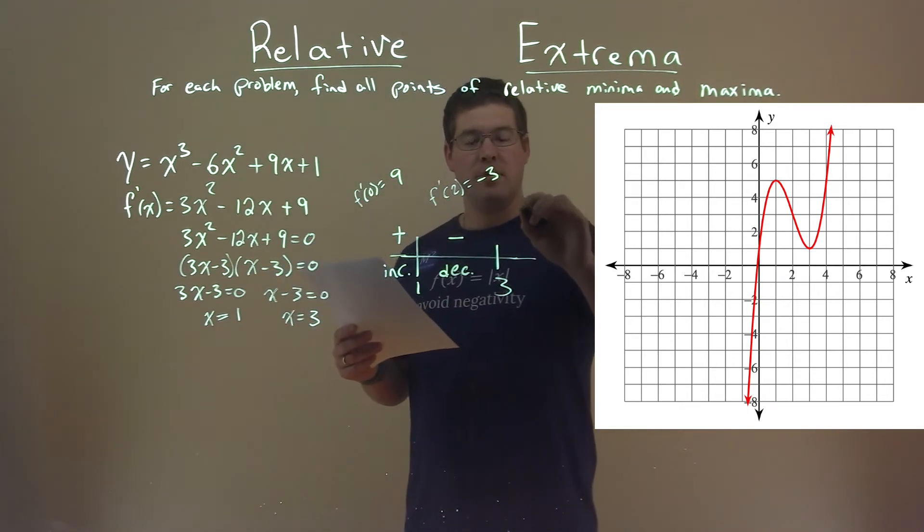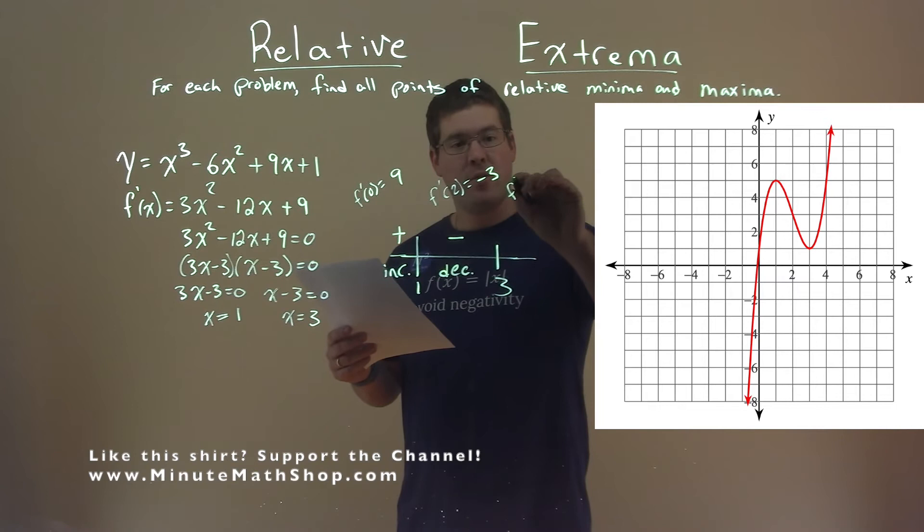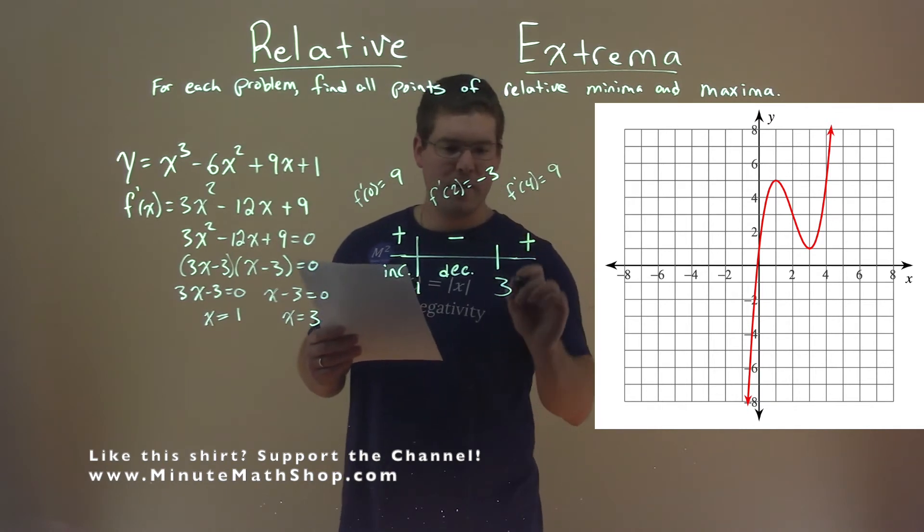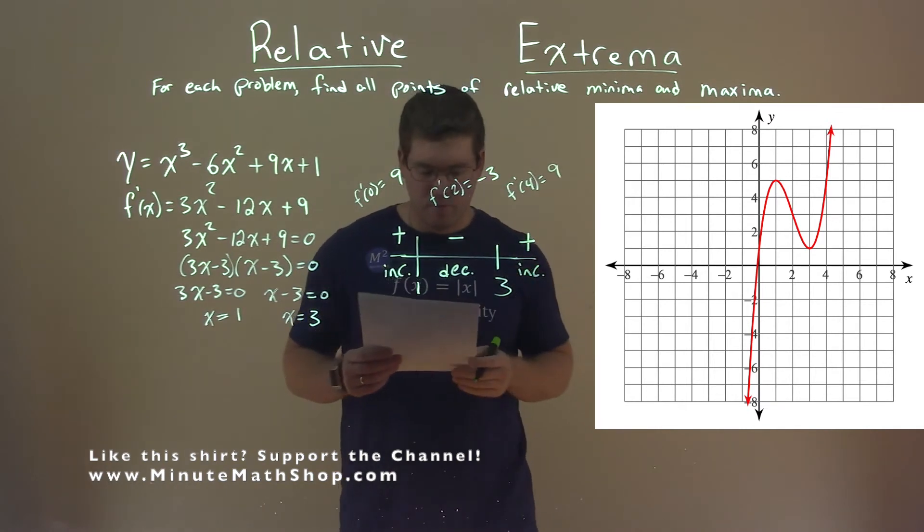Lastly, I picked a value larger than 3, so I picked 4. So f prime of 4 here goes in, and I get a positive 9. Again, it's positive, what I care about, and we're increasing there.